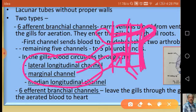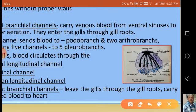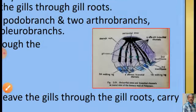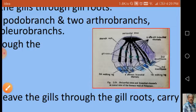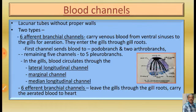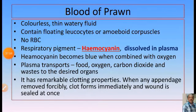The aerated or purified blood from the median longitudinal channel is collected by the six efferent branchial channels, which then supply it to the pericardial sinus or pericardium. This completes the gill respiration portion of the blood circuit.